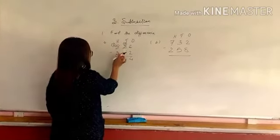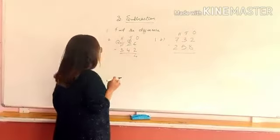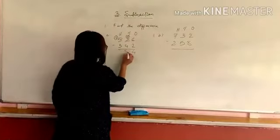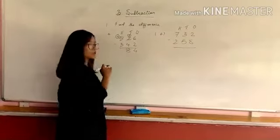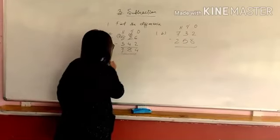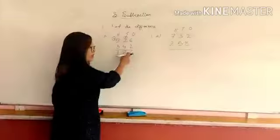Now 12 minus 4 we can subtract, right? So 12 minus 4, how much? 8. 4 minus 3, 1. So this is our difference. After subtracting, we got answer. This is called difference, keep in mind.